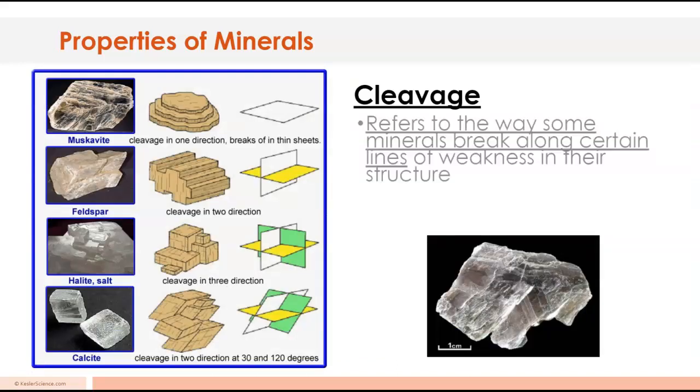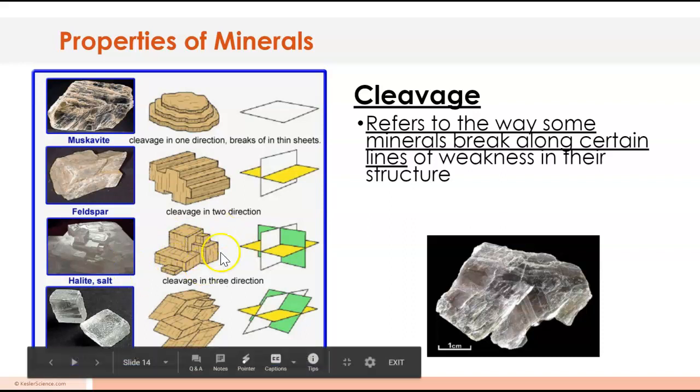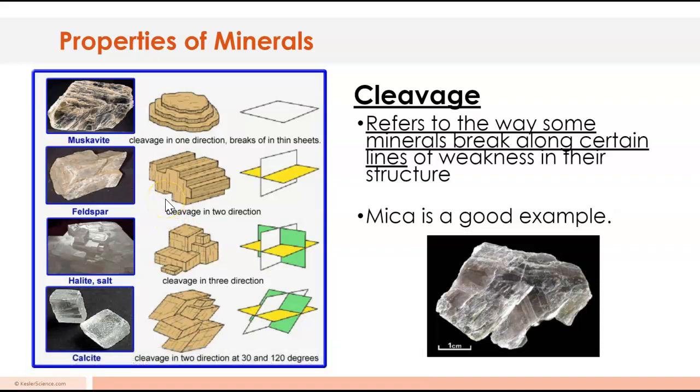Next up is cleavage. Cleavage refers to the way that some minerals break along certain lines. Muscovite has one plane of cleavage so it breaks in one direction. Feldspar has two planes of cleavage so it breaks going up and down and side to side. Halite salt has three planes of cleavage. Calcite has three planes of cleavage but they're at angles. You can look at the way they break and they don't break by accident, they break determined by their chemical structure. Go ahead and hit pause and write that down.